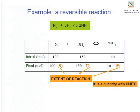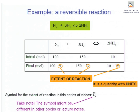Let's look at the definition of extent of reaction again. It is the number of moles reacted of the component in the reaction equation having stoichiometric coefficient 1. The concept of extent of reaction is widely used in chemical engineering and unfortunately does not have a unique symbol, so every book and every lecturer will most likely use a different one to denote this quantity. In this series of videos, the extent of reaction will be denoted by the Greek letter Xi.